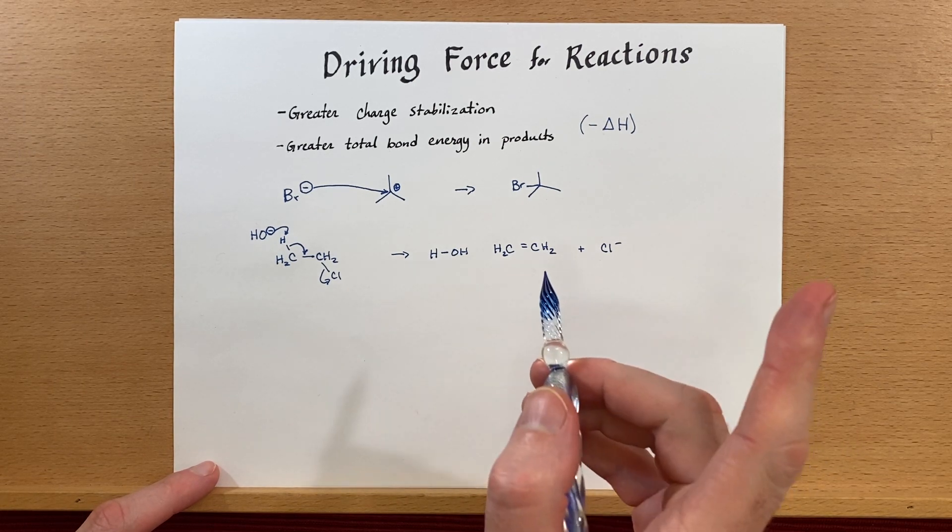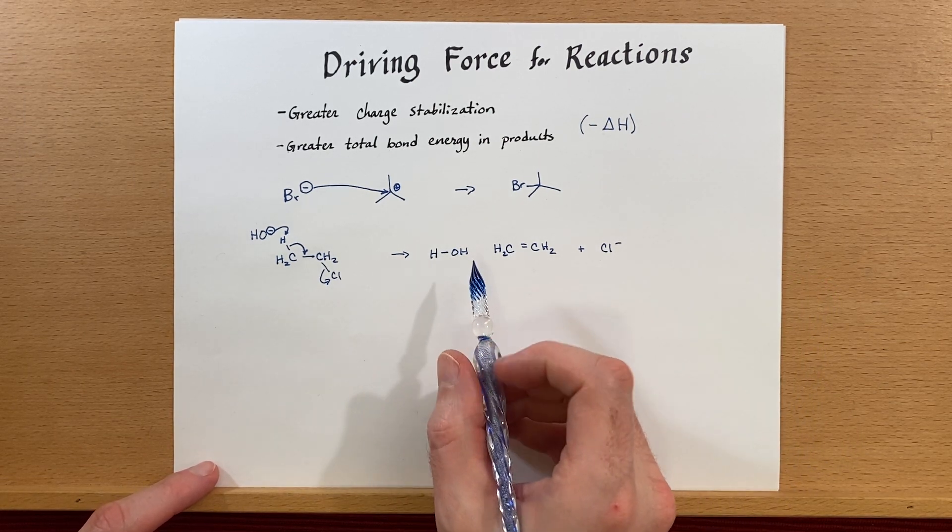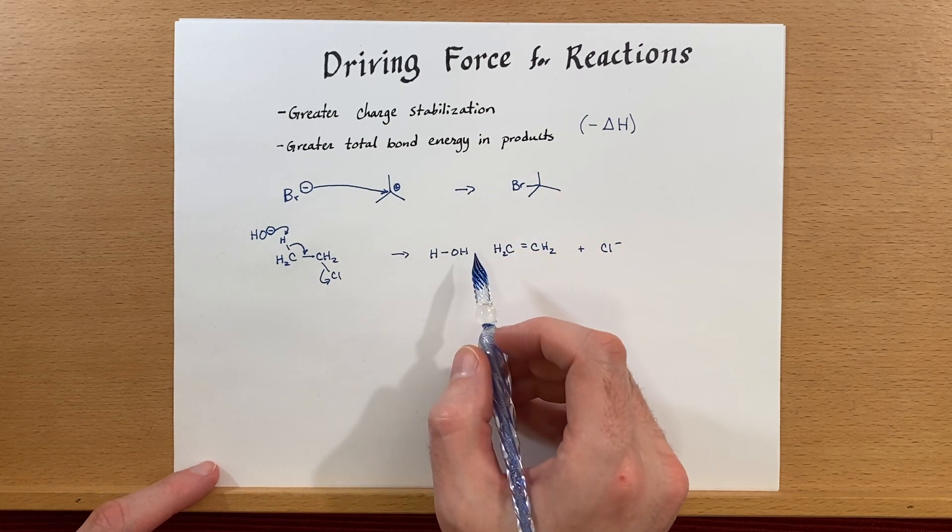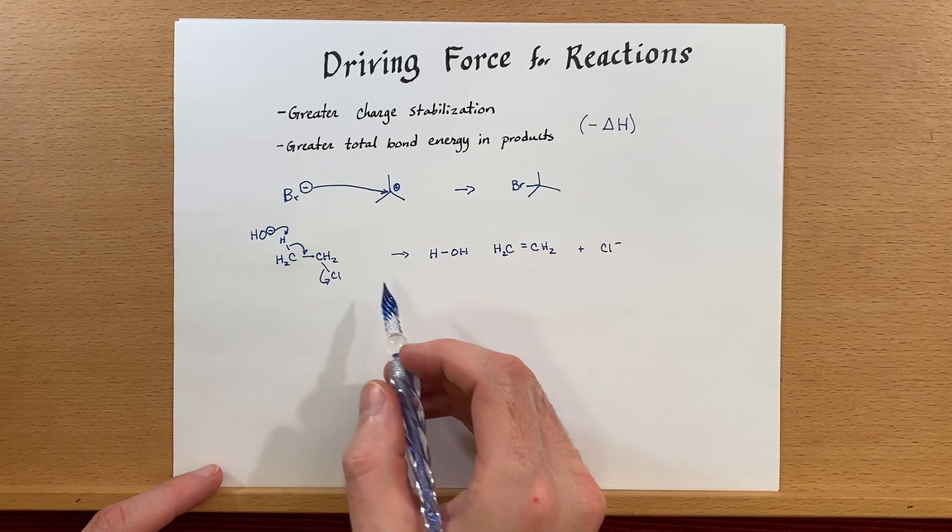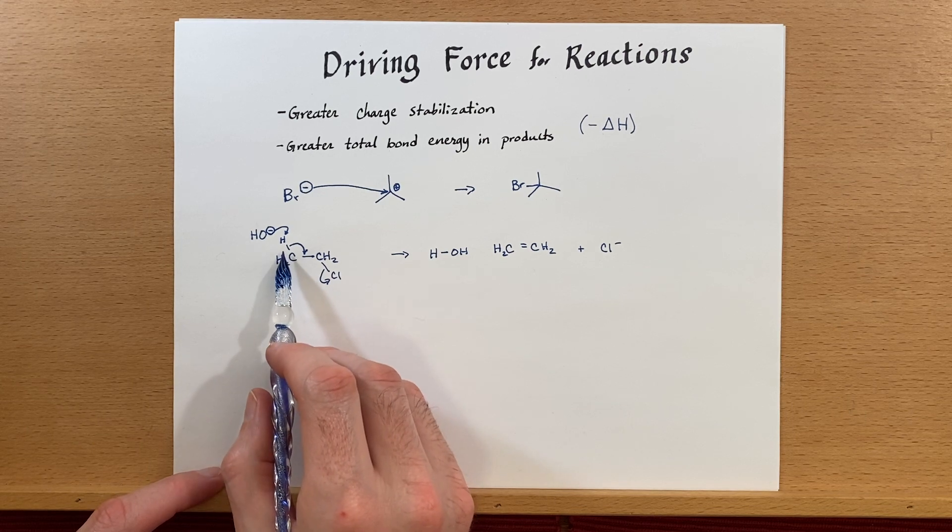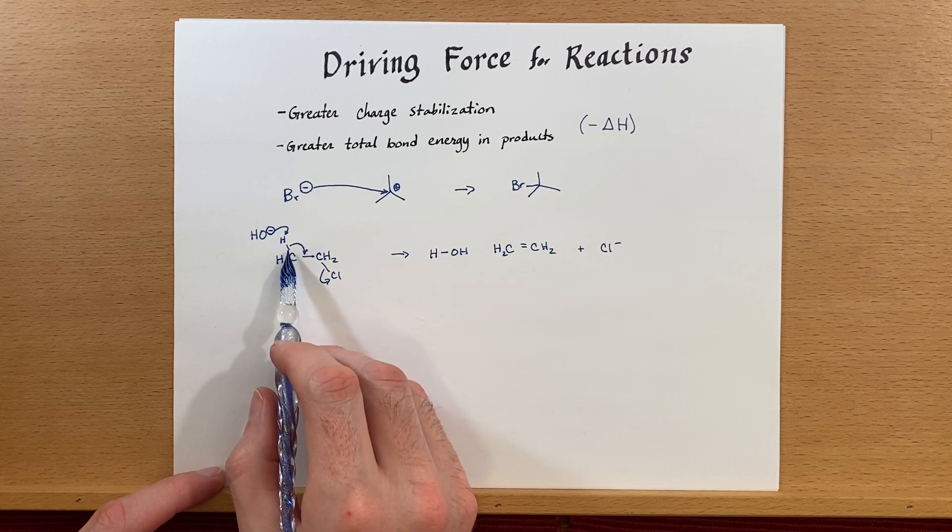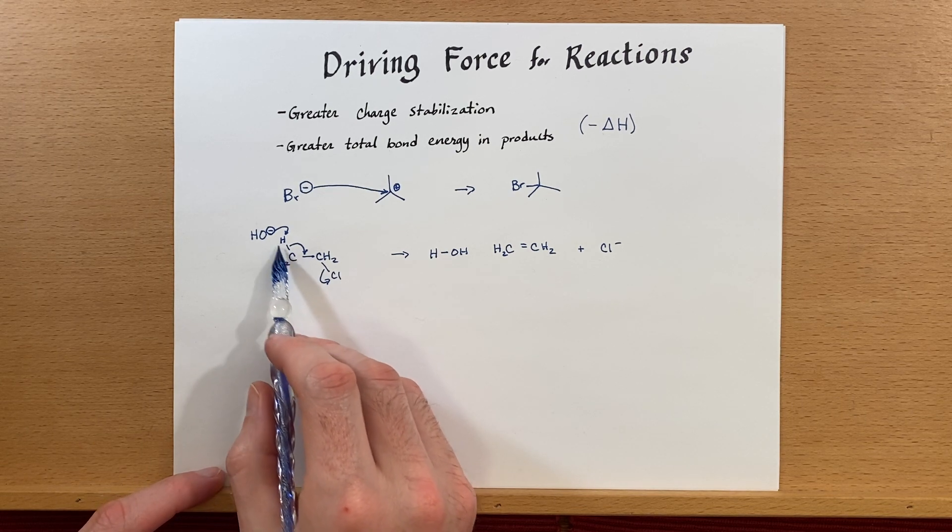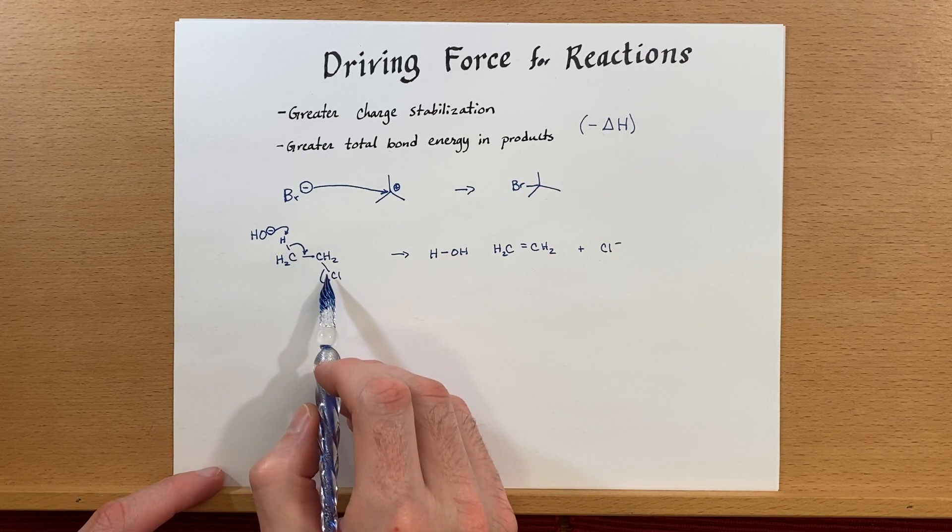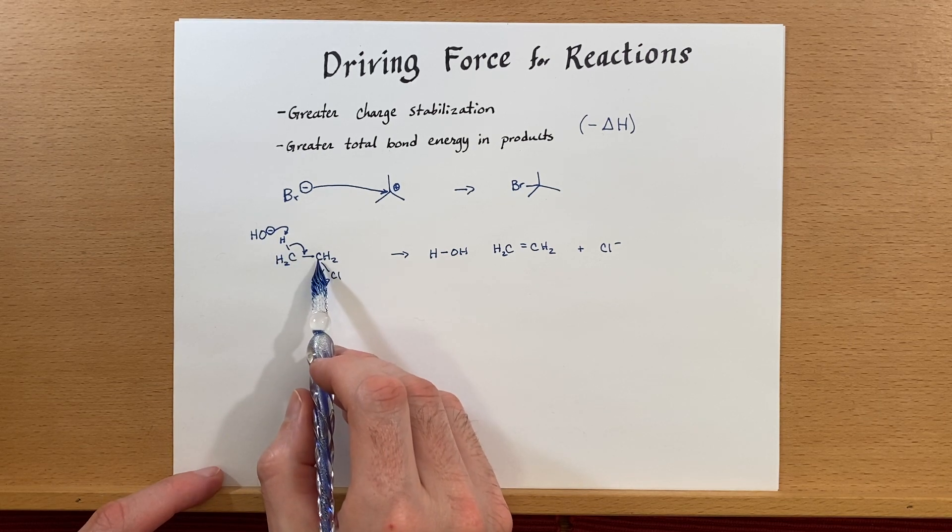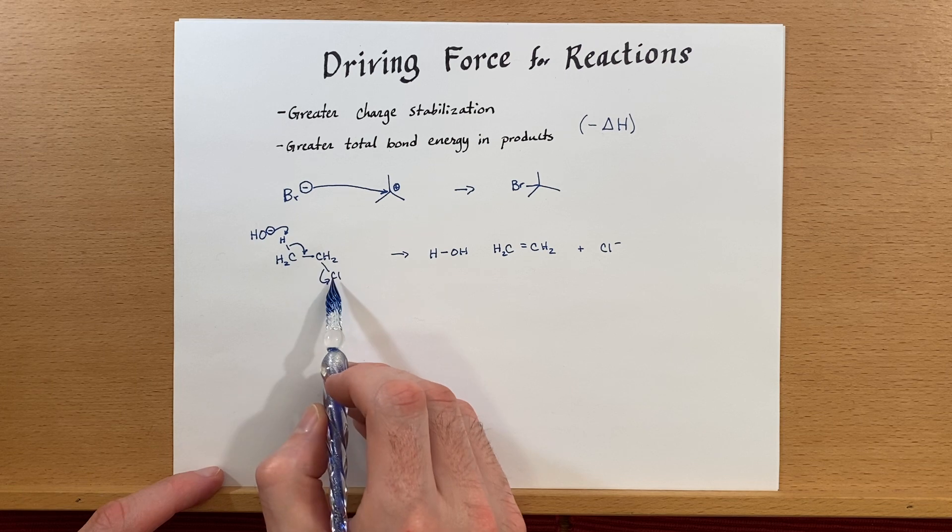Let's look at the total bond energy changes between these two sides. Over here, we have broken a sigma bond between the carbon and the hydrogen, and we've broken a sigma bond between the carbon and the chloride.